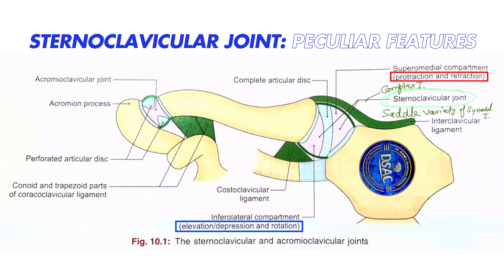Remember that this is a saddle joint, so not only are movements happening in two directions — the vertical axis and transverse axis — but apart from that, rotatory movements are also permissible along the longitudinal axis. This rotatory movement of the clavicle is also happening here in the infralateral compartment.